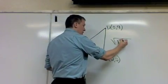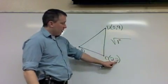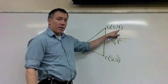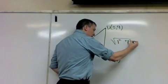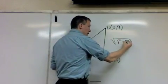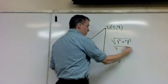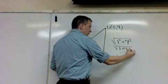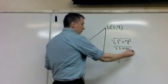Then I do the same thing for the y. The distance between two and nine is seven. So the distance there is seven. And I square it both times. And then I add those two numbers. So one squared is one. Seven squared is forty-nine. One plus forty-nine is fifty.